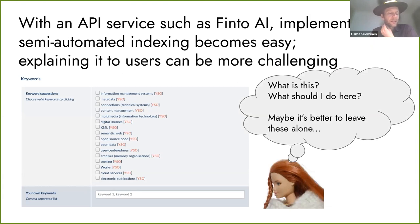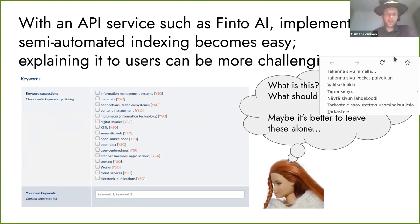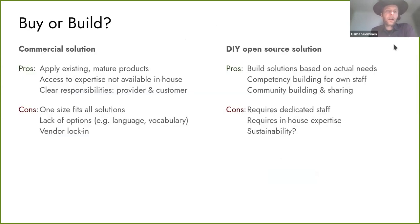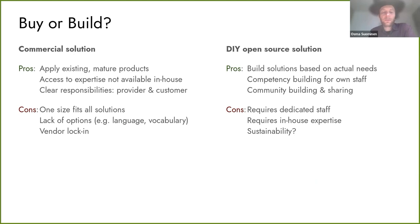We found that once an automated subject indexing service exists, it's quite easy to start using it in new systems because the API is there — it's just a question of integration. The technical implementation can be easy, but explaining it to users is the hard part. We have also had to consider whether to use a commercial solution or build our own. With a commercial solution, a library gets access to products and expertise from the business world, but solutions may not fit perfectly and there's the danger of vendor lock-in. With a DIY open source approach, you need dedicated staff and expertise, but can nurture a community and share solutions. We chose to build our own and are quite happy with that choice, though it's not always easy.